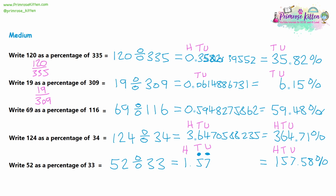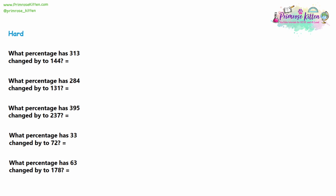You'll notice that when the answers are less than 100%, the number you're looking at is smaller than what you're comparing to. And if your percentage is greater than 100%, the first number is larger than the number it's being compared to. Now for the hard questions, we're going to find out what percentage 313 has changed by to get to 144.